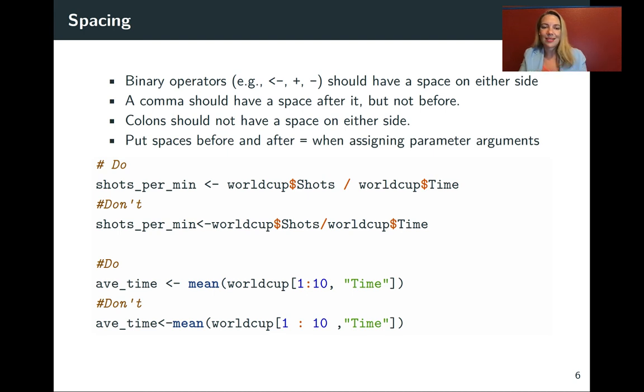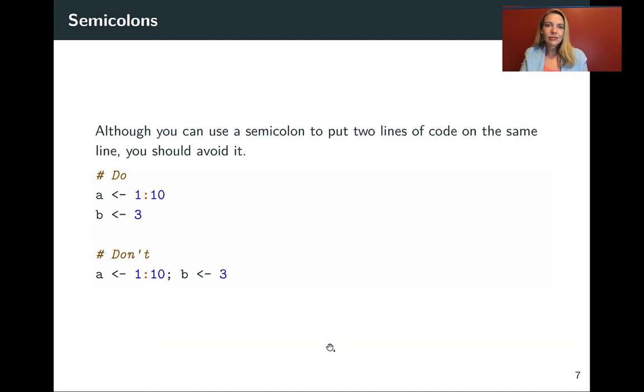Another point, this might be something that you didn't even realize yet but you can put two lines of code on the same line and call them at once and to do that you need to put a semicolon in between. So this is doing the assignment of the numbers 1 to 10 to the object name a and then just the number 3 to the object name b these can all go on the same line but you really should avoid that if you at all can.